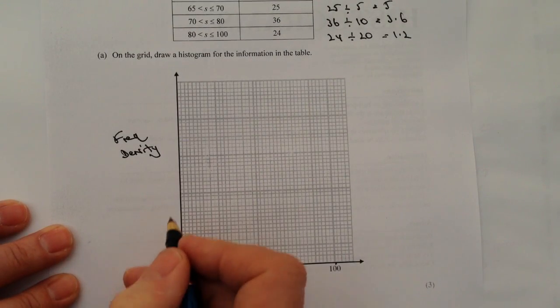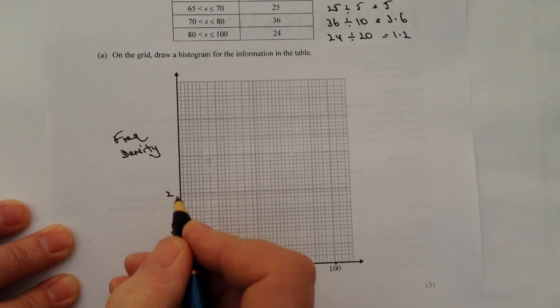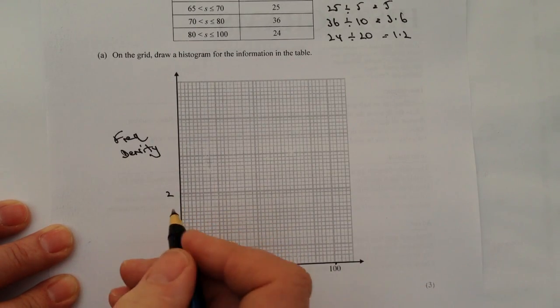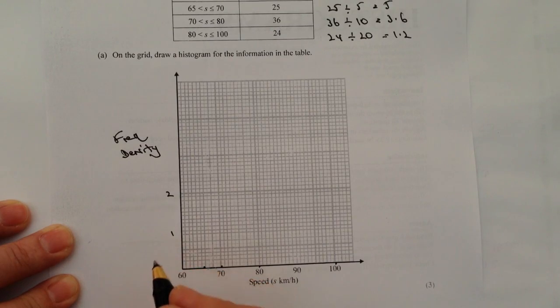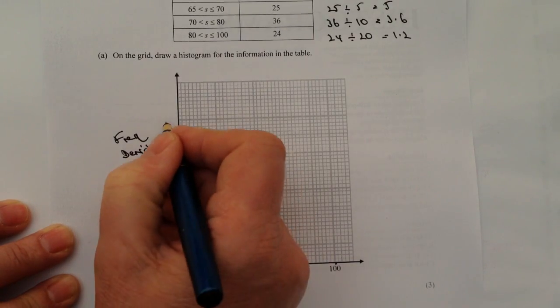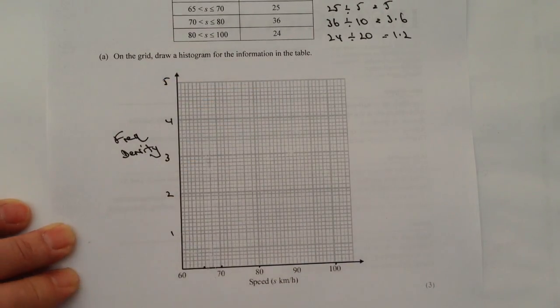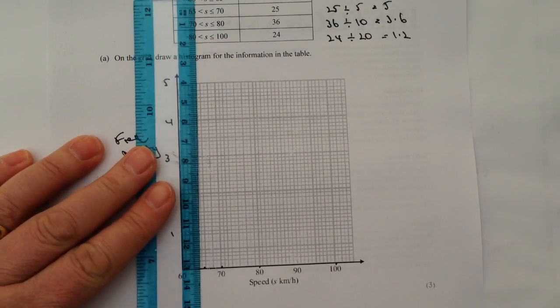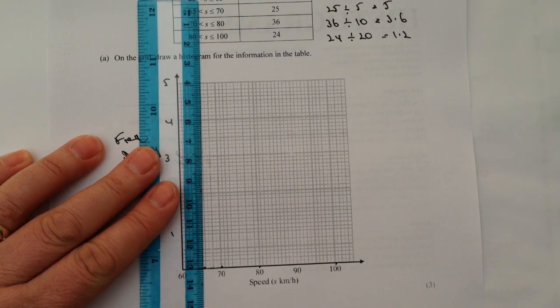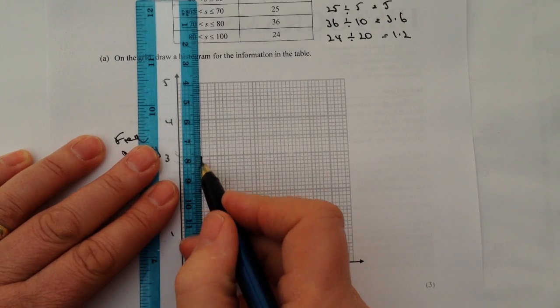And then you can see here that I can put onto this the frequency densities. Now the biggest frequency density I'm going to need is actually 5, and what you'll find very typically with these types of questions is they'll give you the ability to make the graph look very neat and clean when you're drawing it through.